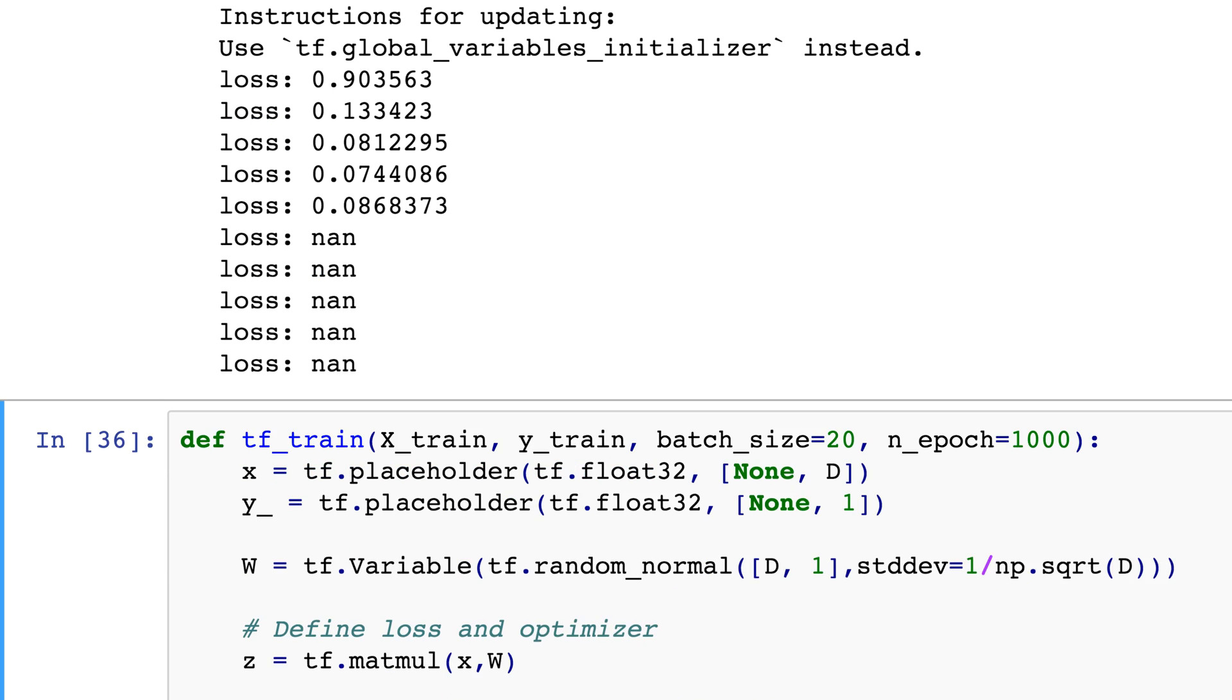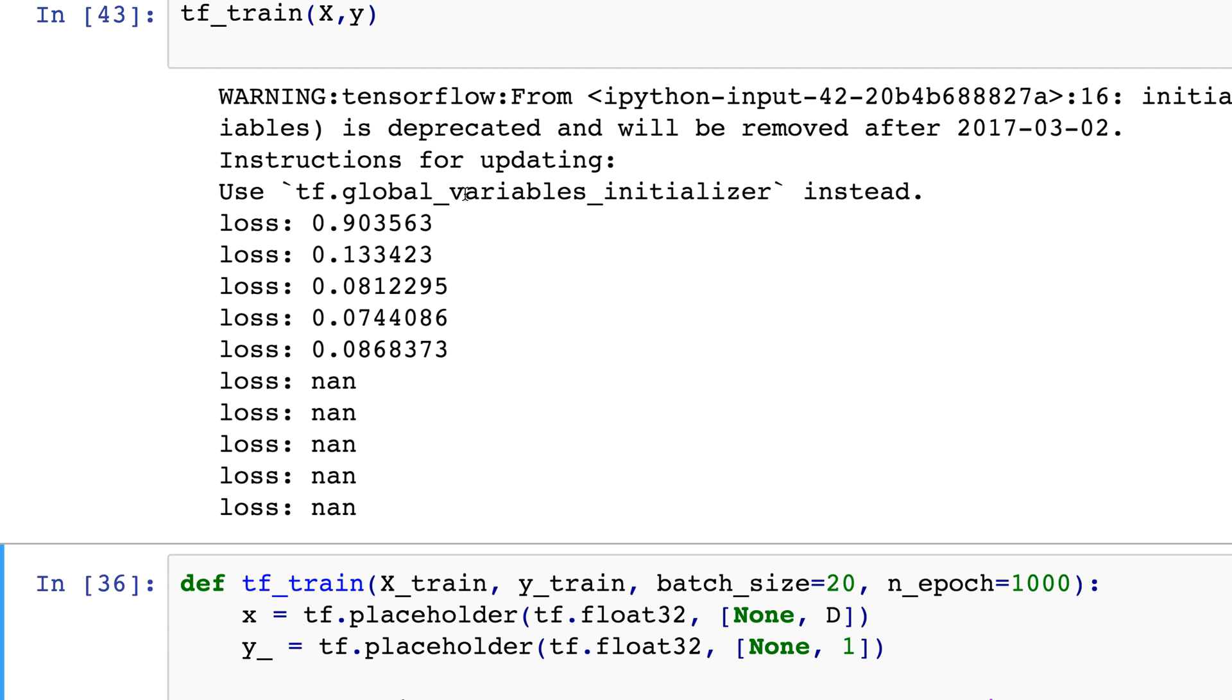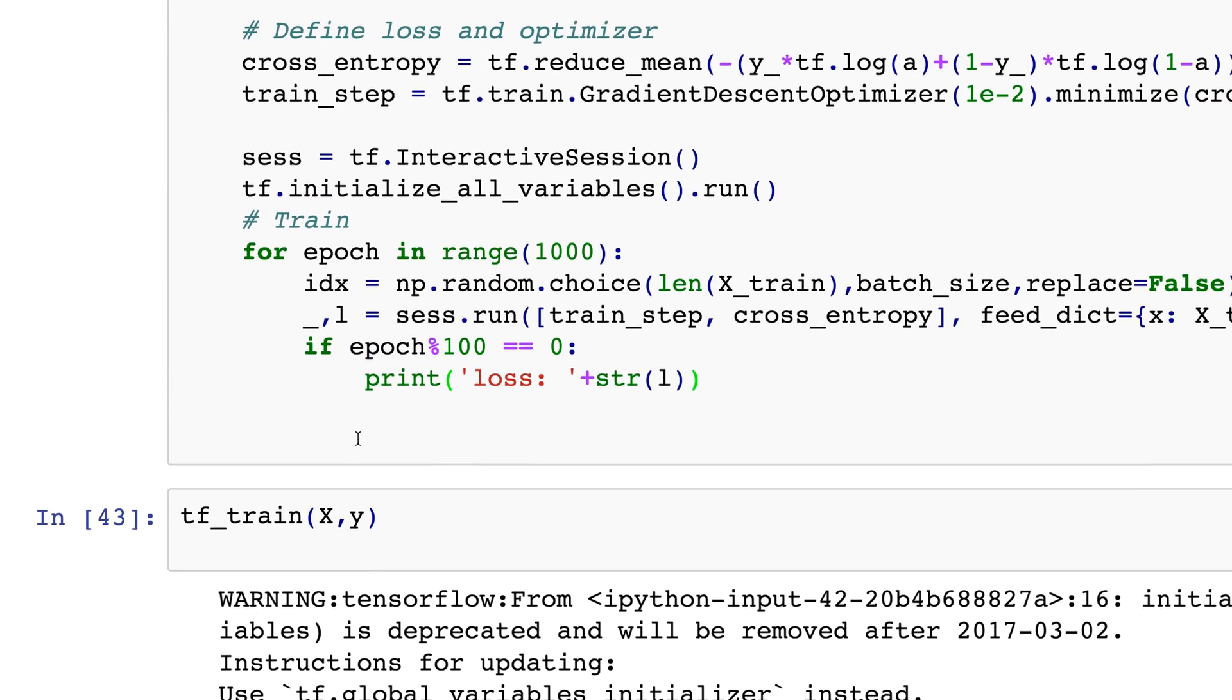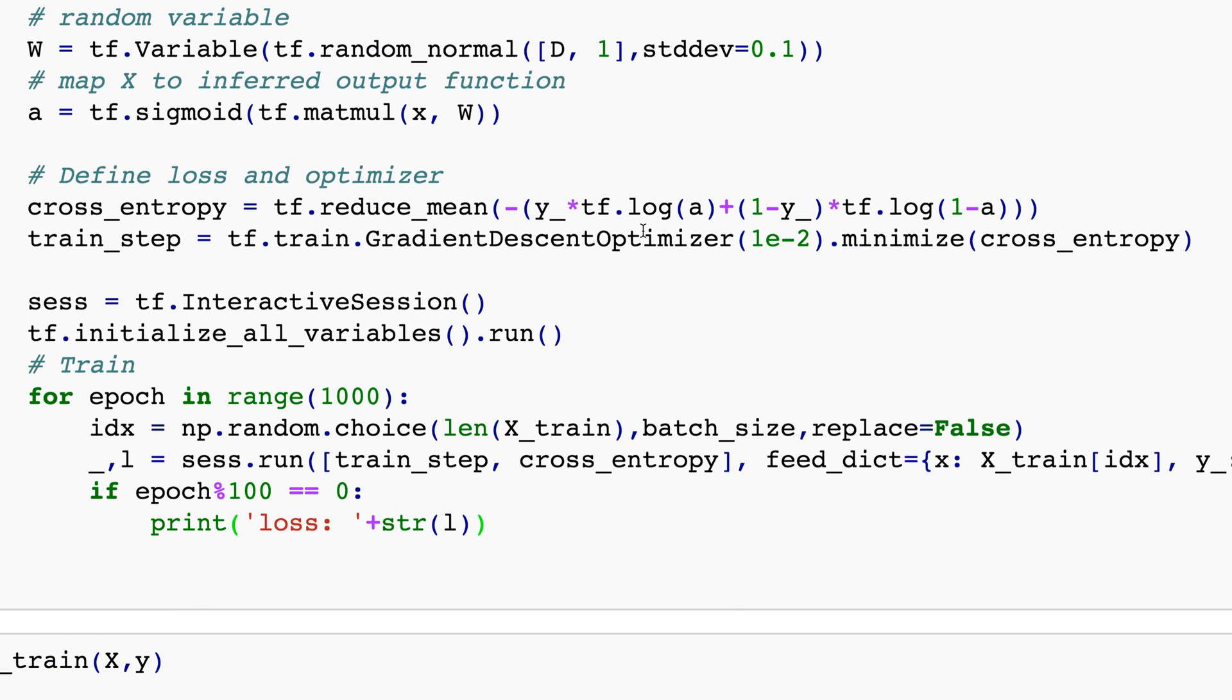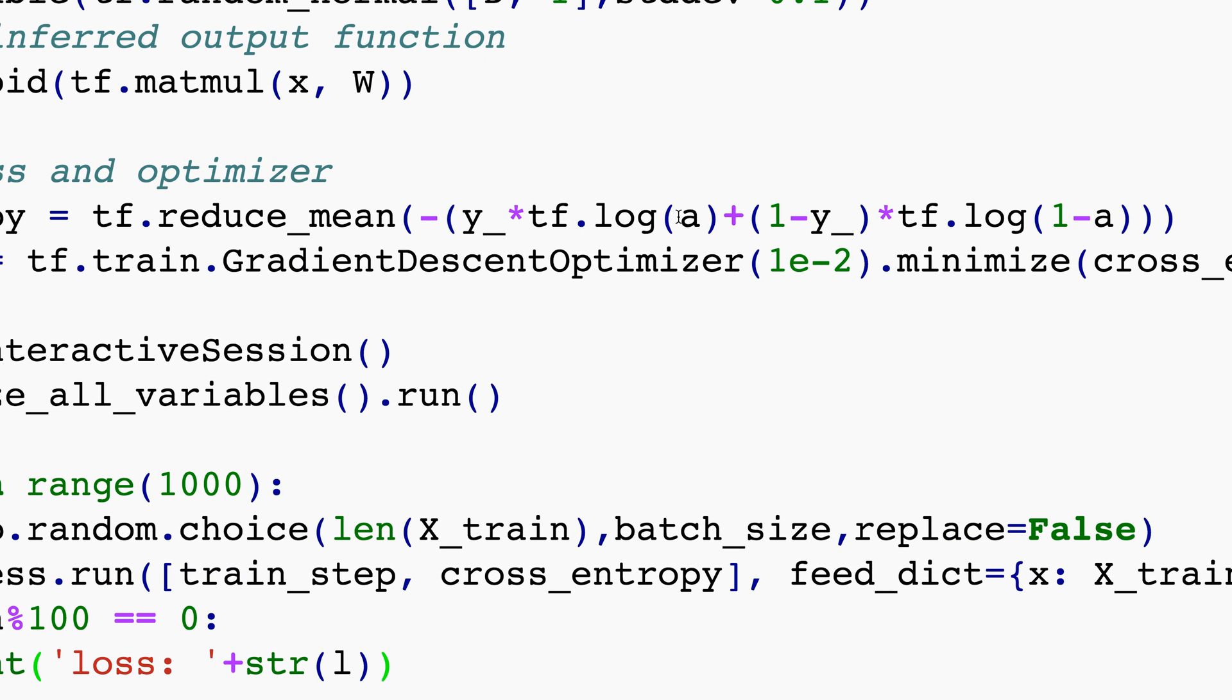So let's see what happens when I do this. Tf dot train, by the way the reason I'm getting this warning is because I'm using TensorFlow 1.0. And you start seeing that the loss starts decreasing but eventually I start getting these NaN values.